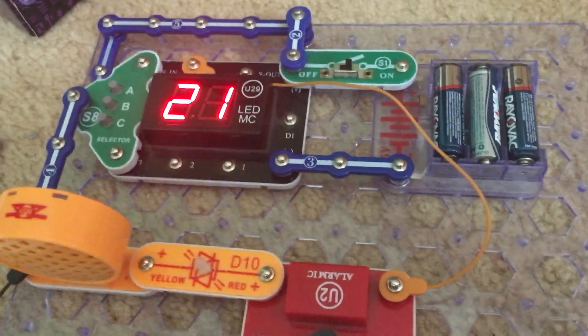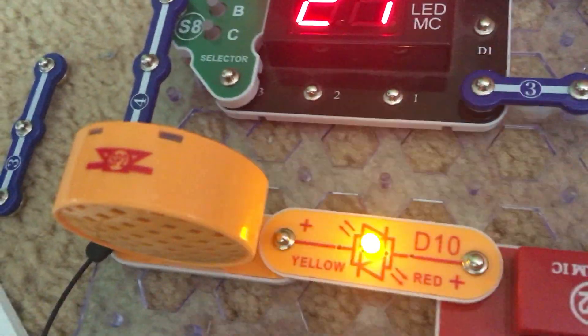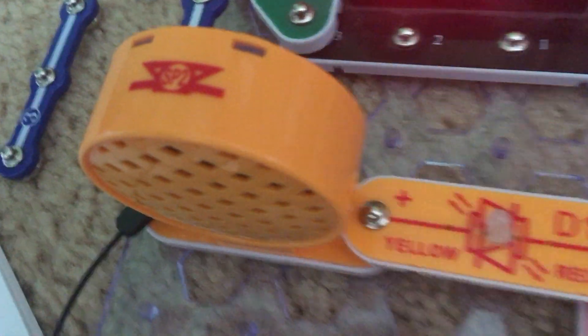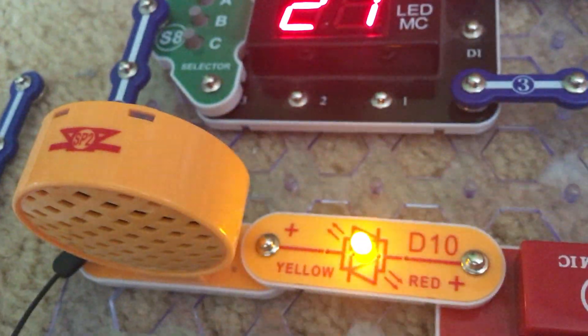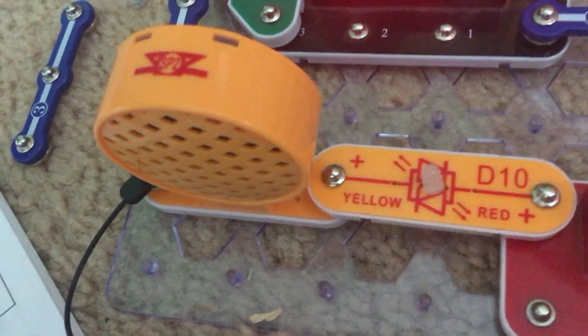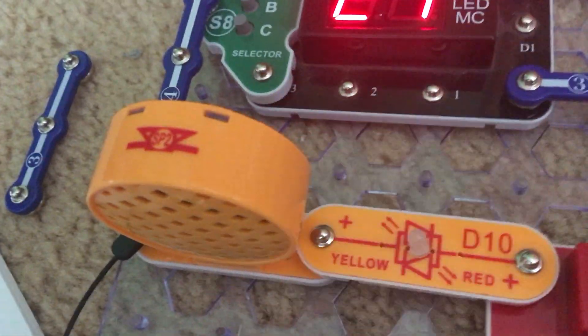Project 57 is called funky siren and light, and this time I have the bicolor LED which is displaying yellow hooked up to the speaker. Not much of a difference, it's just a neat addition with the LED, but the siren is not as loud.